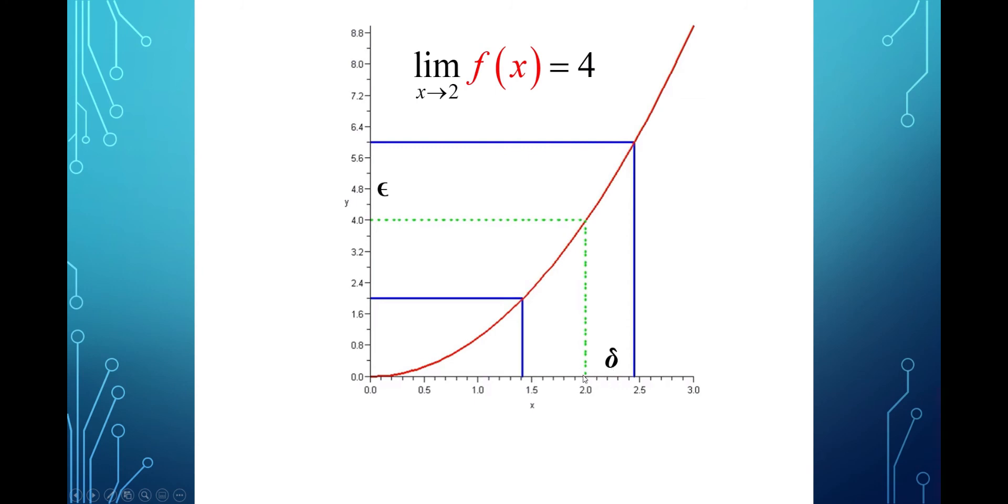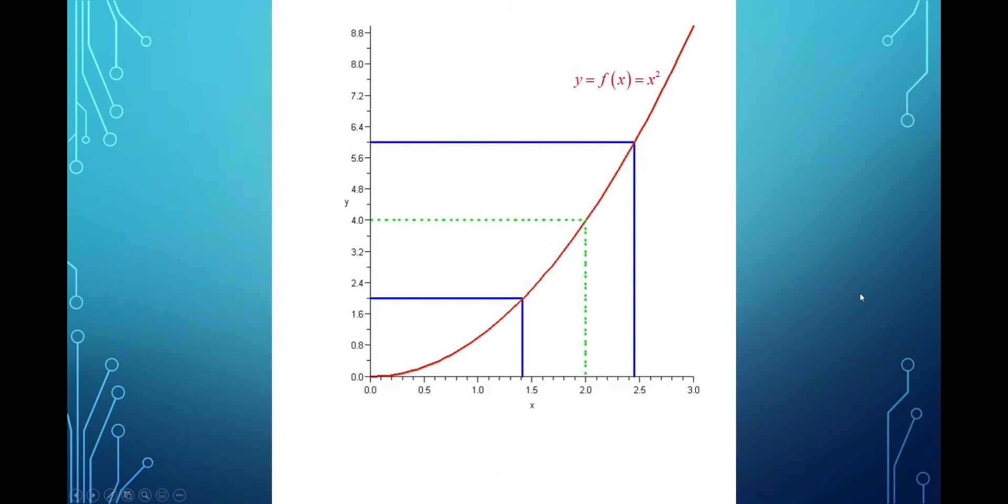It's just that I can find an interval around 2 such that every value for x in this interval gives you a function value in that interval. And I can do it no matter how small this interval here is. This epsilon number can be very close to 0.